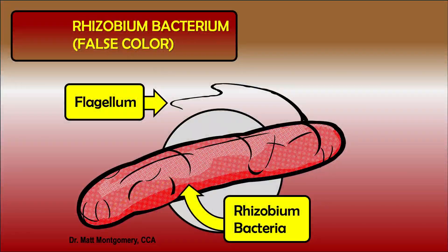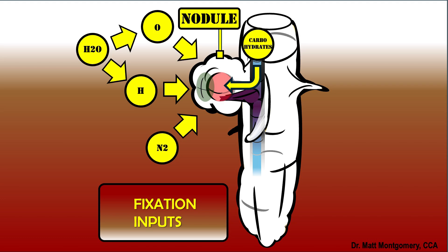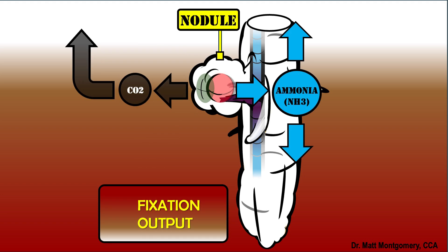We've introduced Bradyrhizobia into the soil profile for the purposes of soybean production, and there's a mutually beneficial, symbiotic relationship between the plant and those bacteria — a relationship in which both parties benefit. The plant produces sugars, and a portion of those carbohydrates are sent to the bacteria, which get the energy they need to maintain life. In response, the bacteria do something unique: they grab N2 gas that the plant can't use, cleave it apart, and transform it into ammonia that the plant can use.